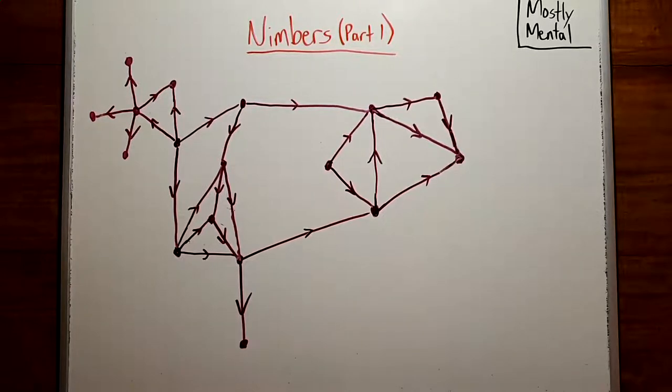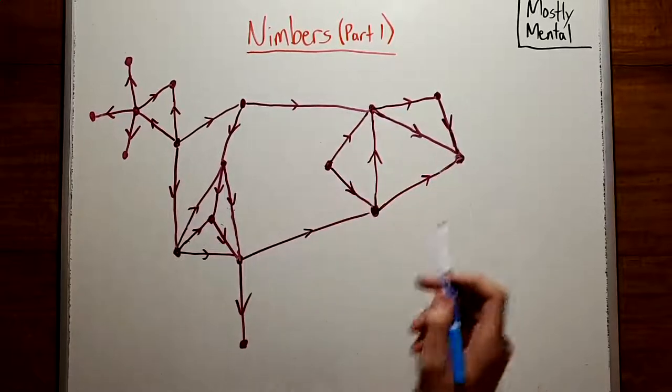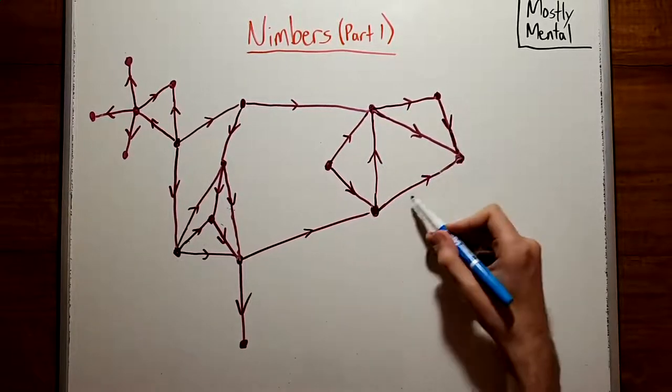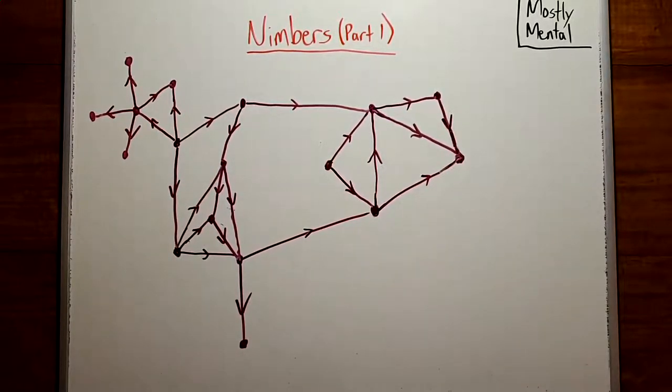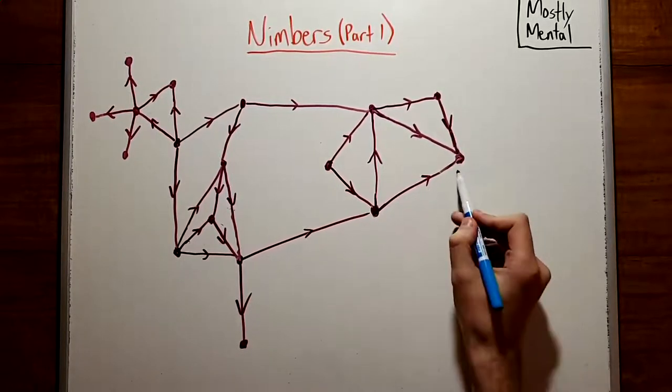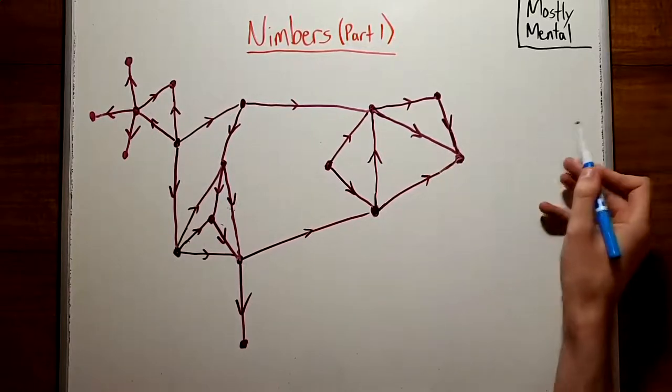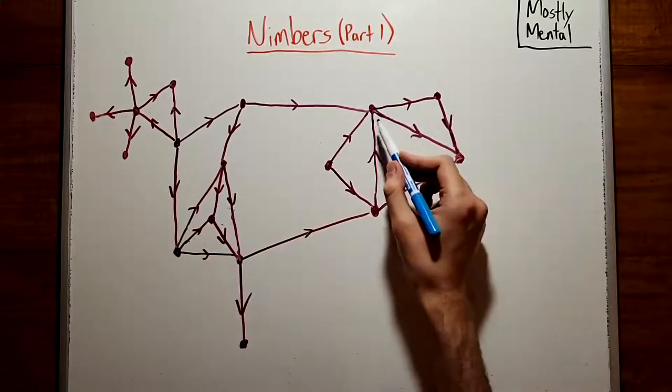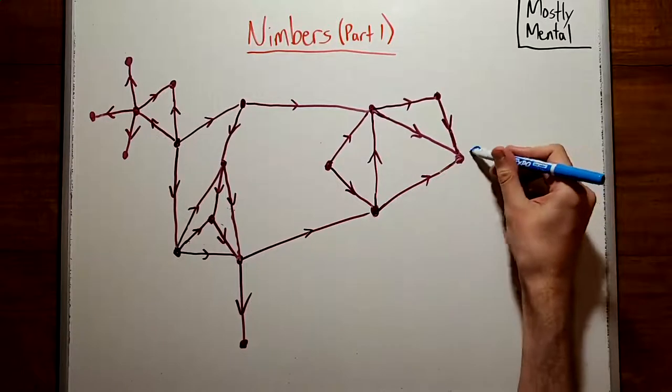Why should that be true? We can think of the positions of a game as a network of nodes, with arrows between them representing possible moves. And we'll assign a value to each position as follows: Each end position, where there are no arrows going out, only arrows coming in, gets a value of zero.